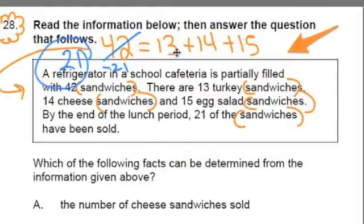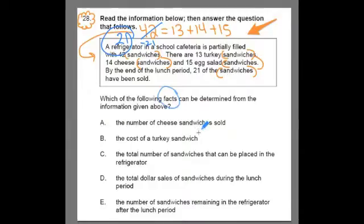We don't know how many egg, how many turkey, how many cheese have been sold. All we know is that 21 have been sold. So let's continue on with the question. It says, which of the following facts can be determined from the information given above? And this word facts is really important. It's got to be something that's very clear that we can pinpoint in the question.